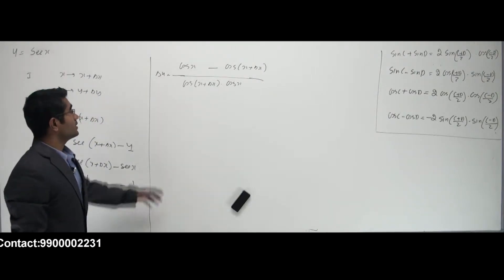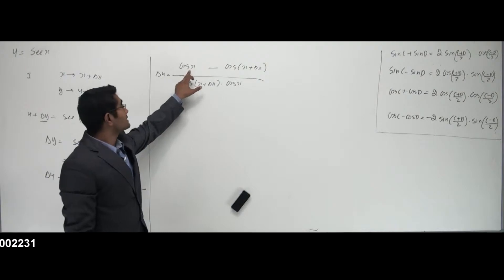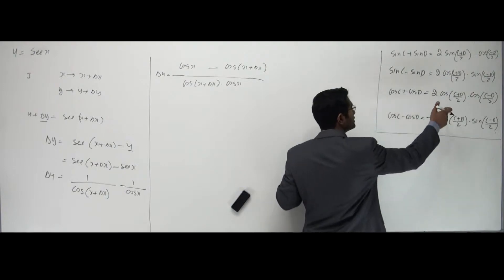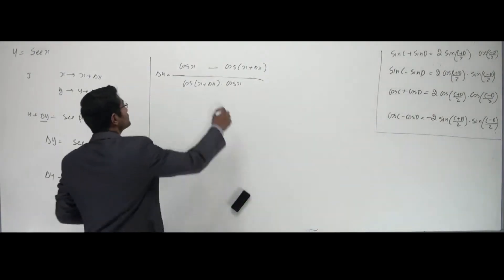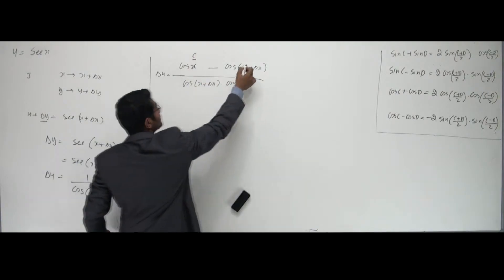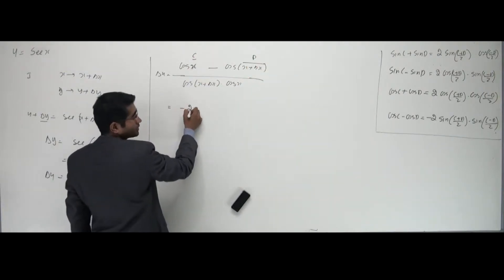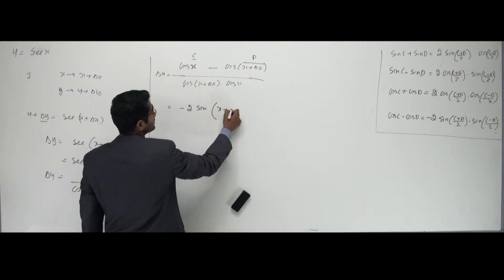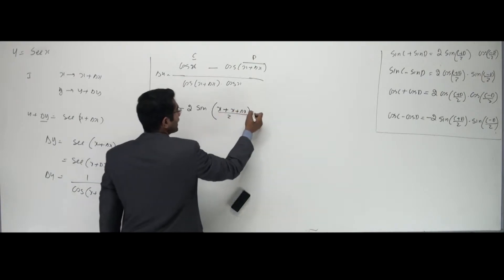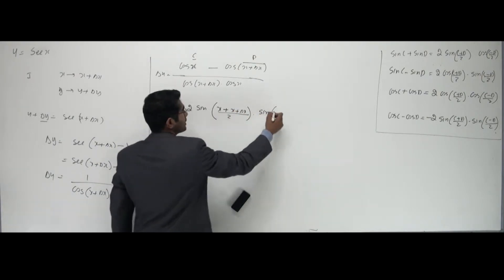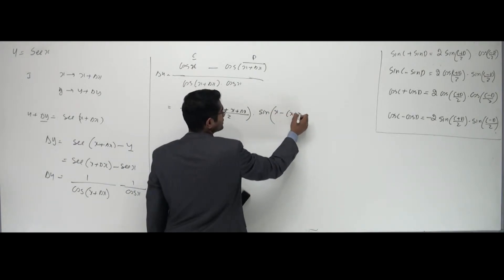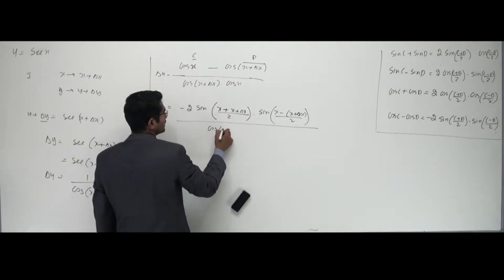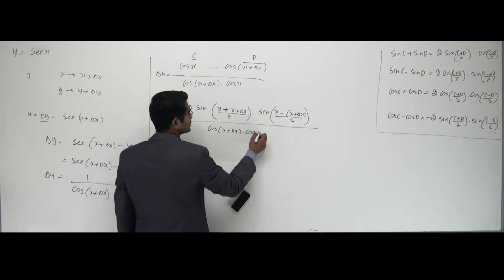Now this looks like one of the transformation formulas — that is cos C minus cos D. The formula is: cos C minus cos D equals minus 2 sin((C+D)/2) sin((C−D)/2). So who is C here? C is x, and D is x plus delta x. So that looks like minus 2 times sin((x + x + delta x)/2) times sin((x − (x + delta x))/2), all divided by cos(x + delta x) times cos x.